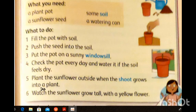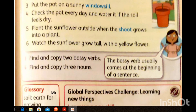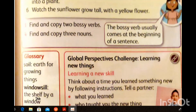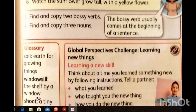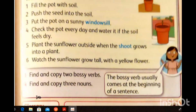Number five: plant the sunflower outside when the shoot grows. What is the meaning of 'shoot'? A shoot means a tiny plant that grows from the root. The sunflower will grow with a yellow flower. These are the steps to make a plant, or to grow a seed.